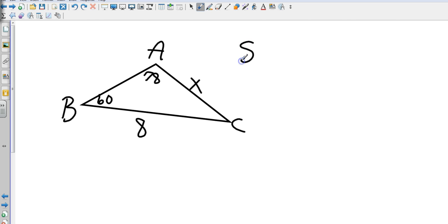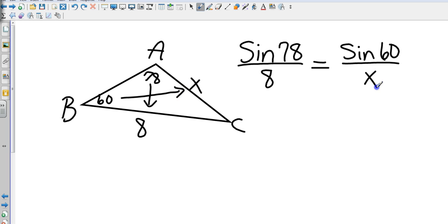And so I know that I'm going to use the sine of 78, and because that's angle a, I need to find side a, which is opposite that angle, so that's going to be 8. And then my next one is going to be sine of 60 all over its opposite side, which in this case would be X.